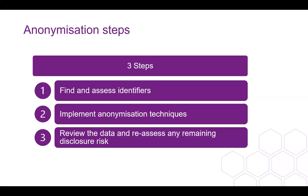So how do you anonymize? We're going to get into the actual strategies now, building on the exercise we've just done. We propose three steps to anonymization. First, find and assess the identifiers — both direct and indirect identifiers, and identify any sensitive personal data. Once that's done, implement anonymization techniques. And finally, review the anonymized data, reassessing any remaining disclosure risk and further anonymizing as needed. In this process, consider what other data information is available and how that might affect identifiability.